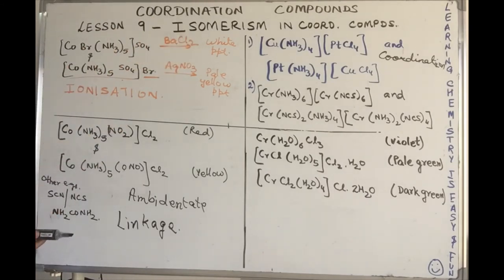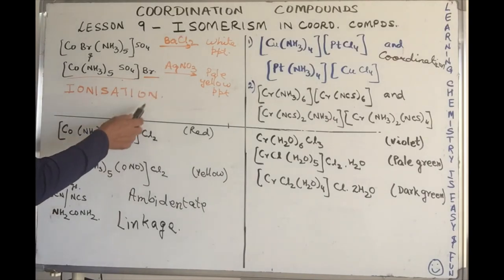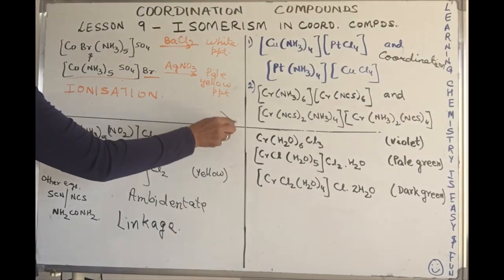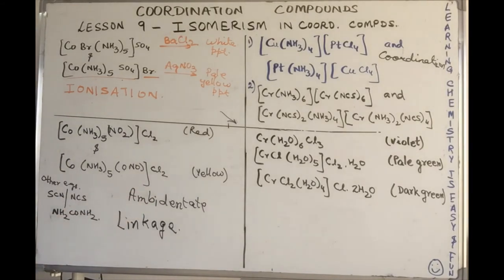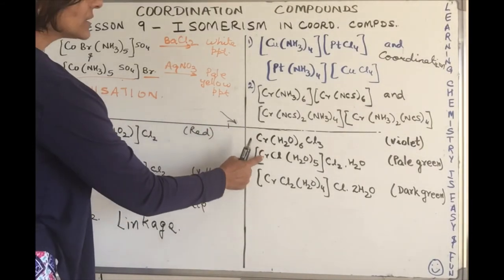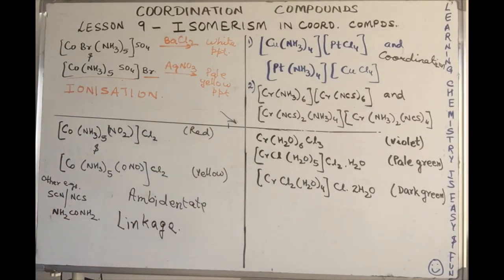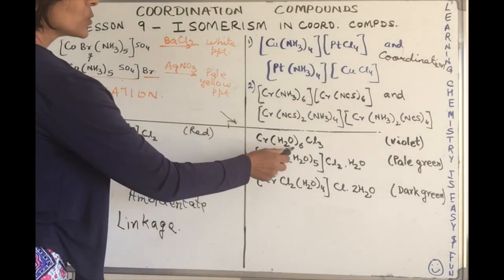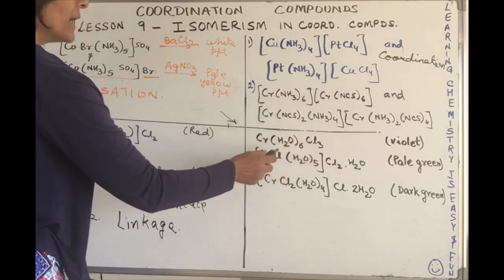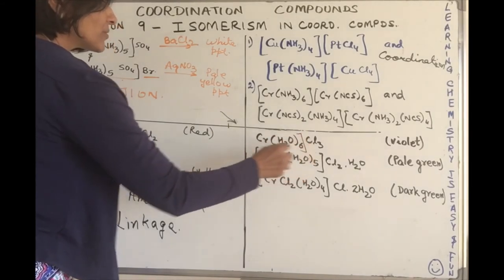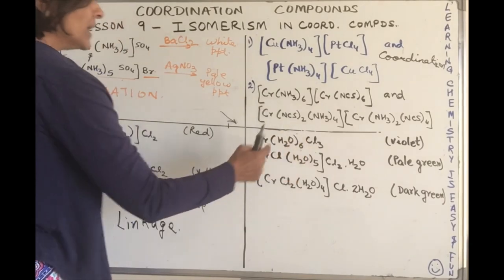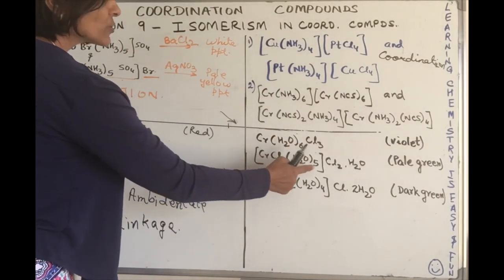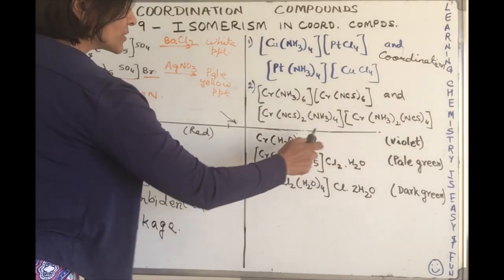So we have given examples of ionization isomerism, linkage isomerism, coordination isomerism. What is left? Hydrate, yes. Hydrate means very good, it means water. It's an example or it's a special type of ionization isomerism where we are dealing in context of water. So we've written three isomers of the same compound: [Cr(H2O)6]Cl3, [CrCl(H2O)5]Cl2·H2O, [CrCl2(H2O)4]Cl·2H2O.